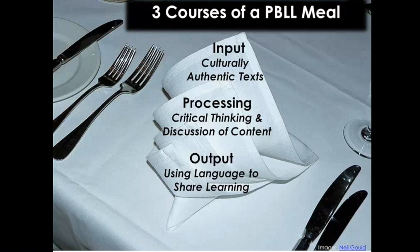The second course of a project-based language learning meal is cognitive processing. Once students have had a chance to explore texts that offer multiple perspectives — pro-environmentalist texts, texts that say we should focus on developing the economy, texts from both the United States and the target country — students need opportunities to really process that text. Processing means thinking about the meaning of the text on multiple levels: its personal meaning for the student, what it means for the community, its cultural or social significance, and its literal meaning.